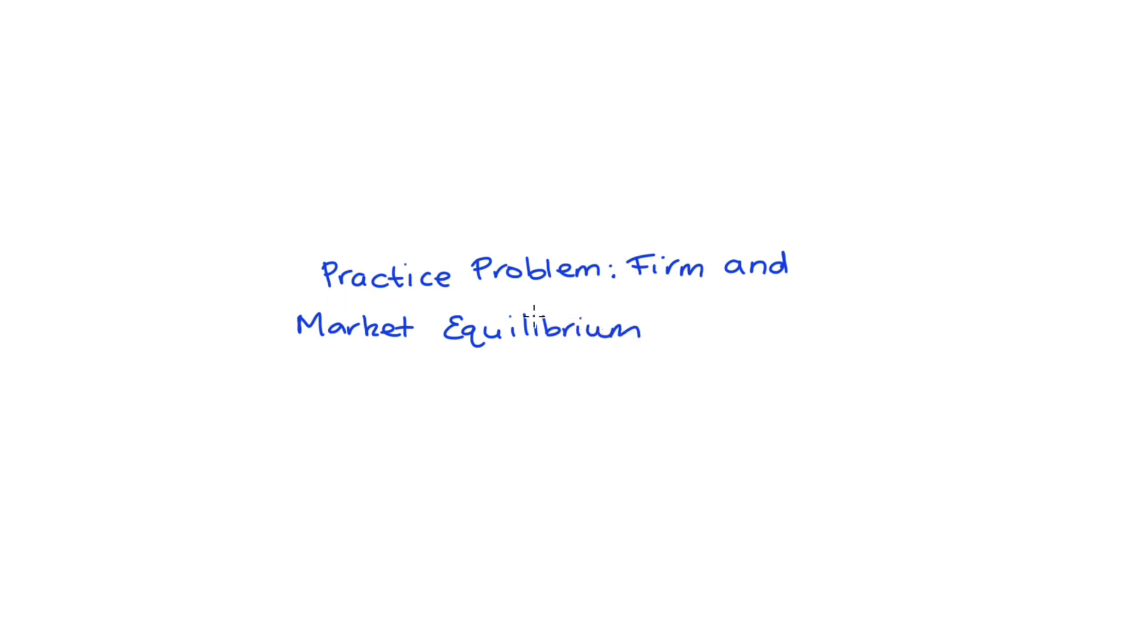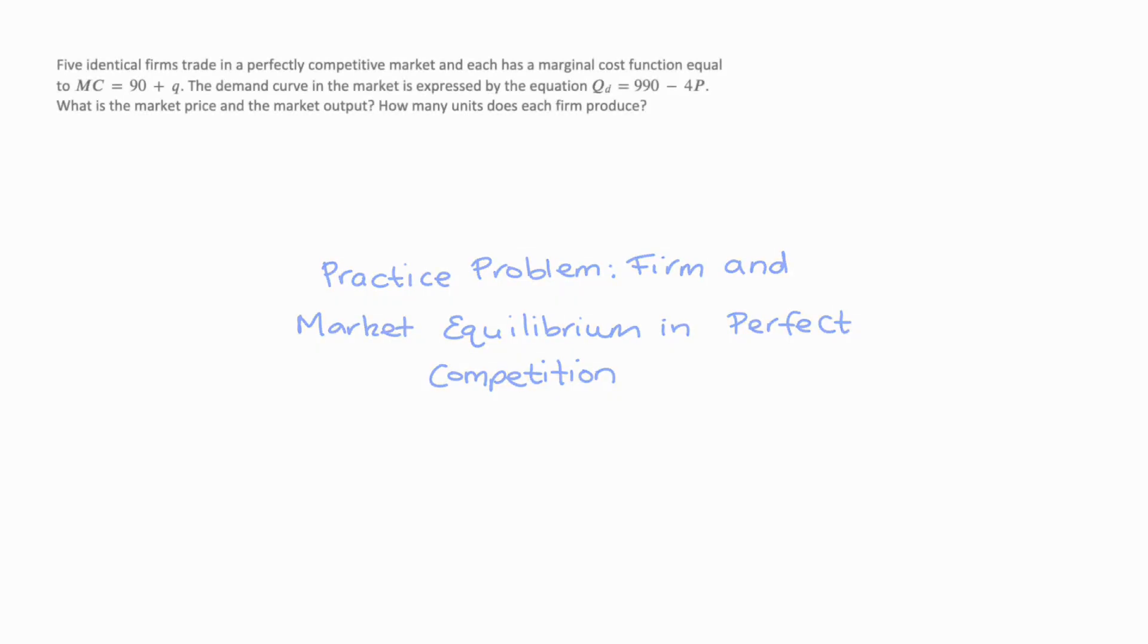Hi everyone, in this video I'm going to look at a practice problem that finds equilibrium outcomes for the firm and the market in perfect competition. So my question is this one here, we have five identical firms who are trading in a perfectly competitive market.